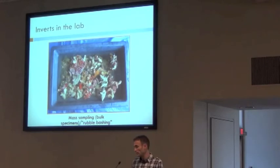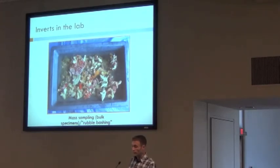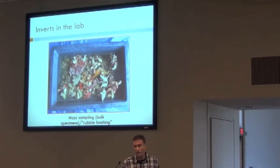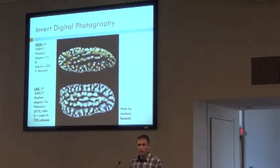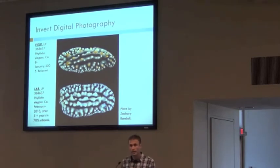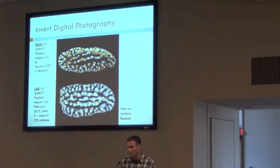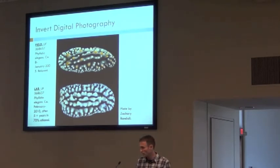This is another type of bulk sampling they do called mass sampling, where you take rubble and smash it, looking for little things that might be hiding inside. And to show an example from their specimens — photographed in the field while relaxed, then preserved in ethanol — you can see them some five years after the fact. Again, some information is lost.